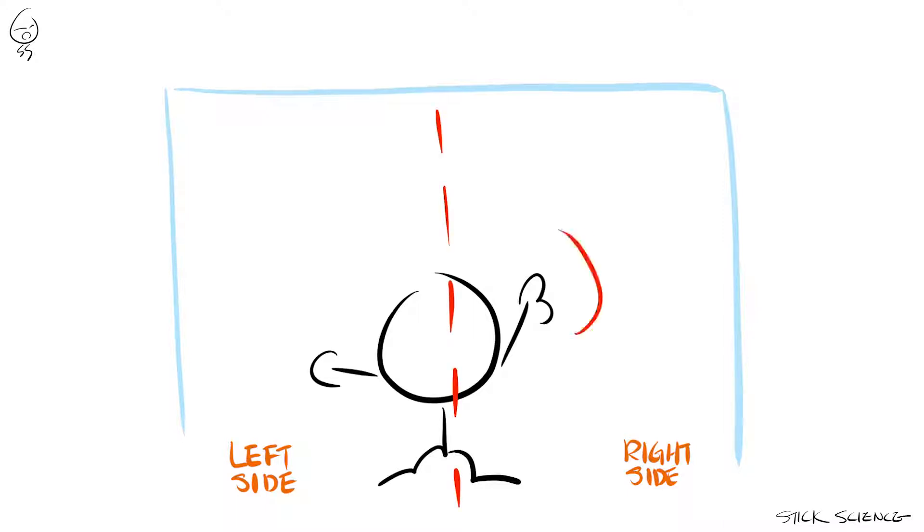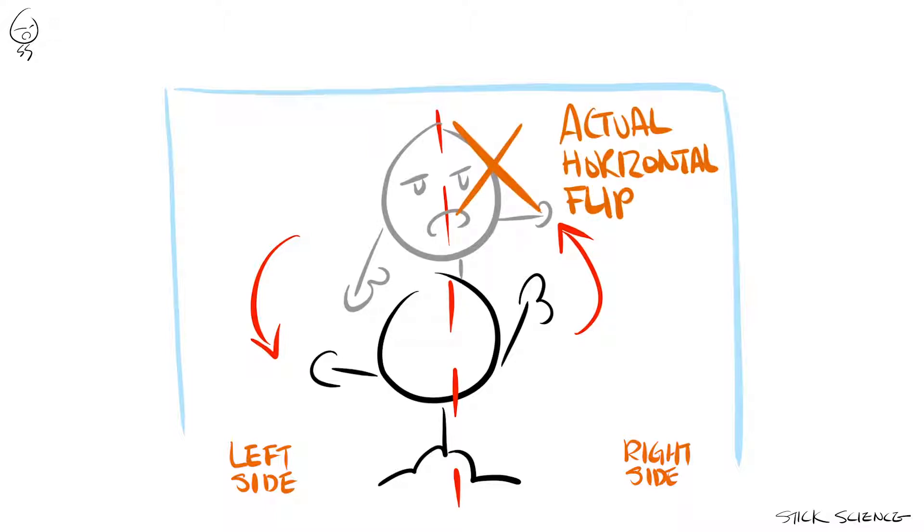Draw an imaginary line down the middle of your body and rotate yourself inside your head. That's what a horizontal flip should actually look like. But that's not what you see in the mirror is it?